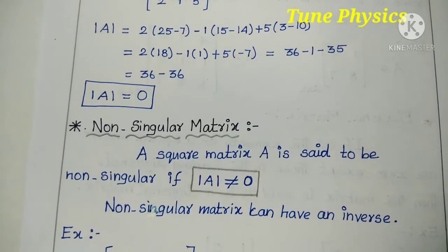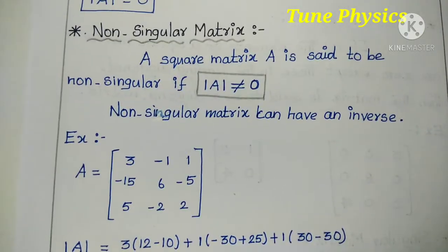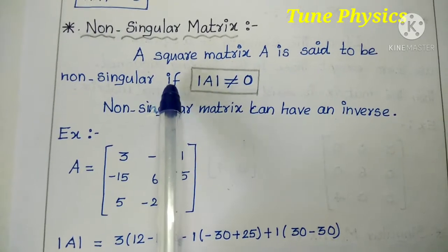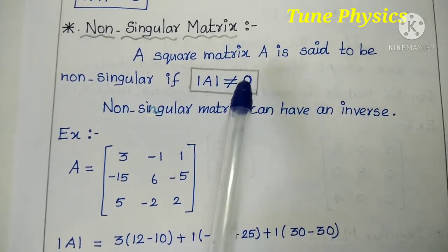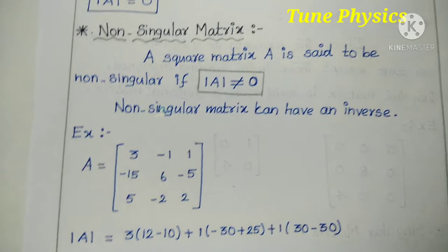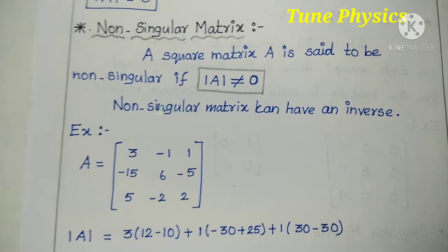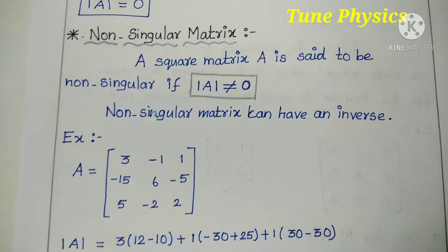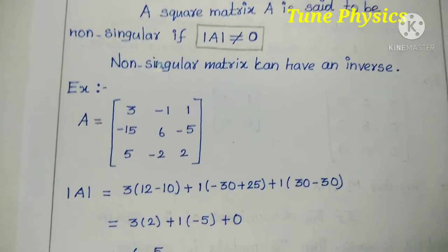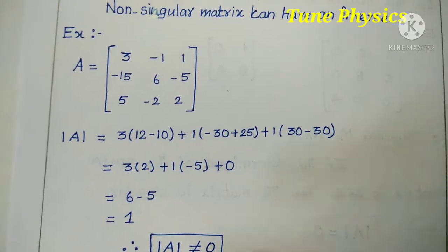A non-singular matrix is one where the determinant is not equal to 0. A square matrix A is said to be non-singular if the determinant of A is not equal to 0. If the determinant value equals 0, the matrix is singular; otherwise it is non-singular. A non-singular matrix can have an inverse. Here is an example: A is a 3 by 3 square matrix.